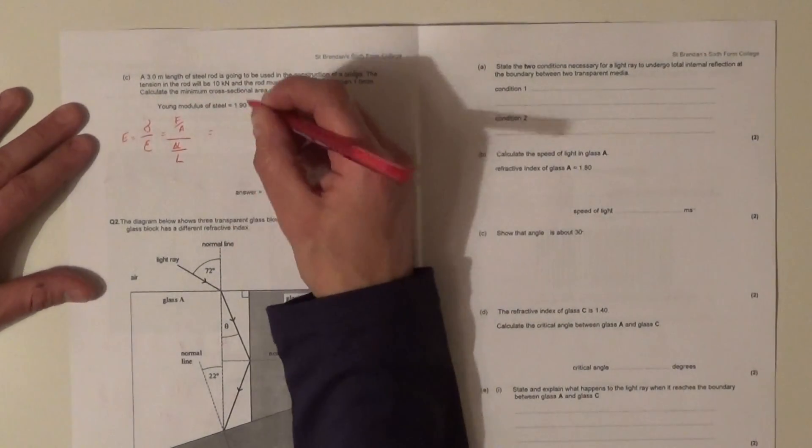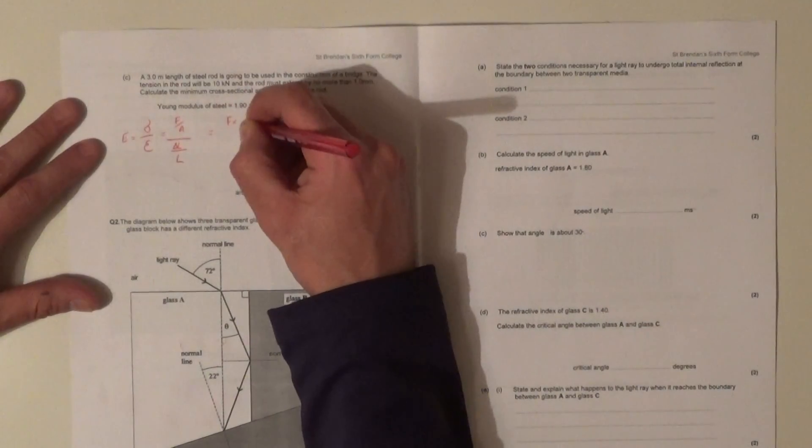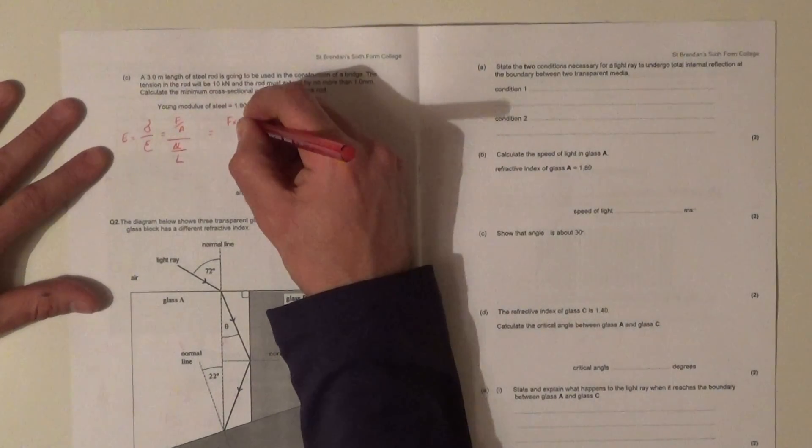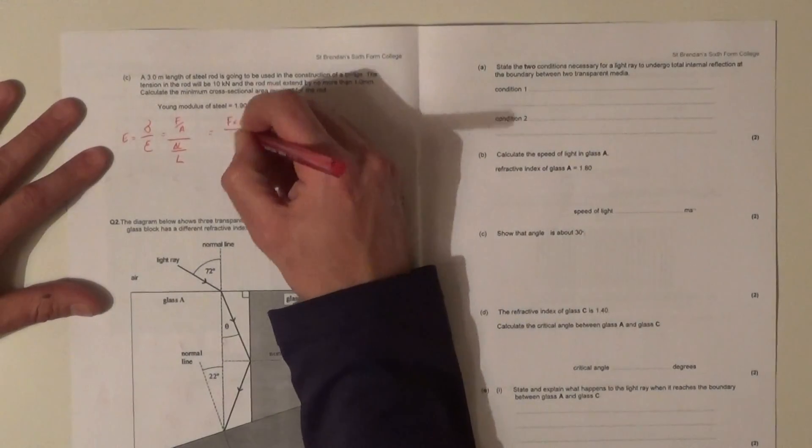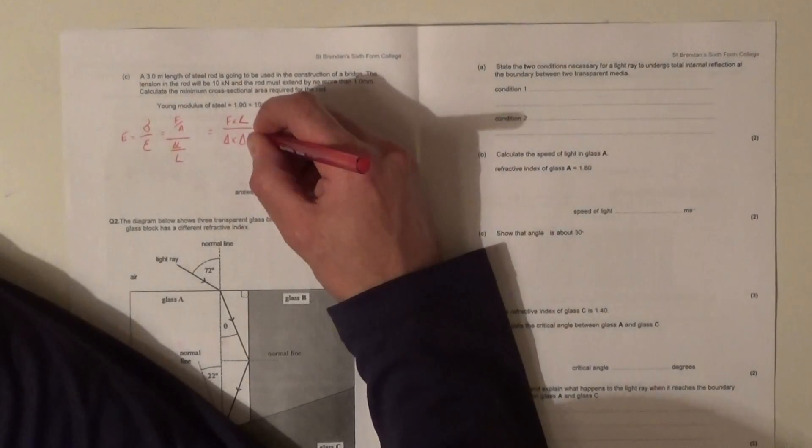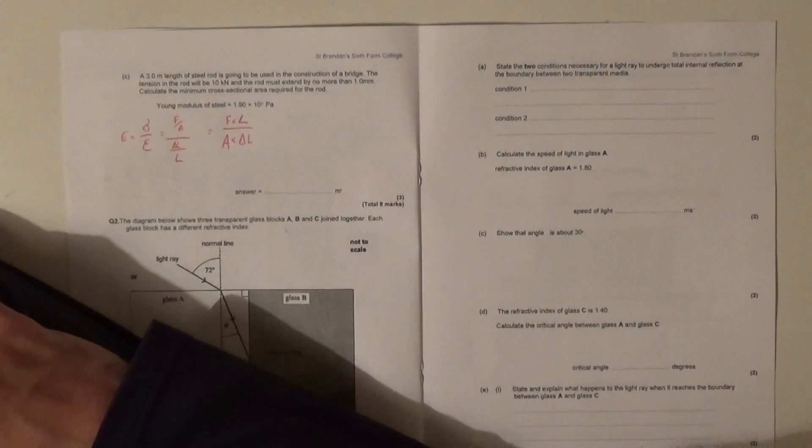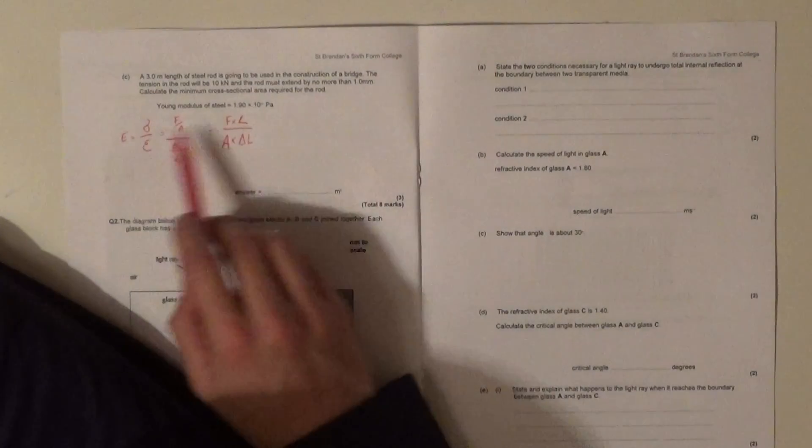It's therefore the same as F times by L over A times by delta L. That's an A there, okay? Force times length over area times delta L. Now once you've got this bit, and I'm just going to put E back on the end of it over there.